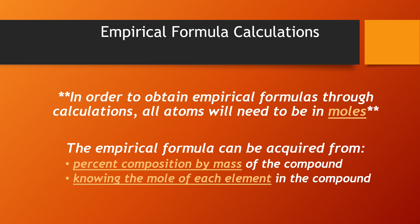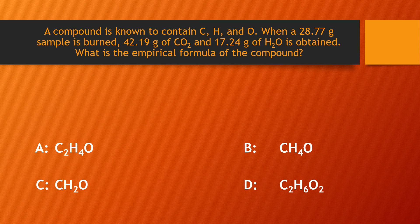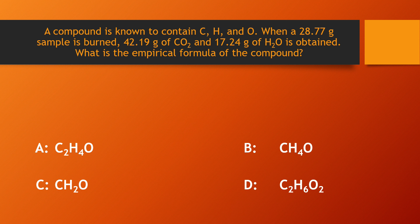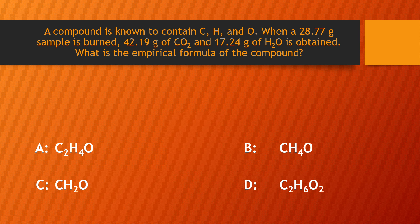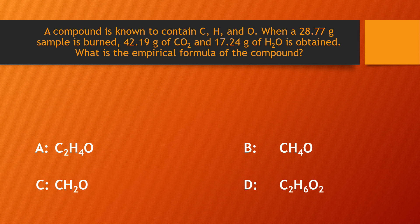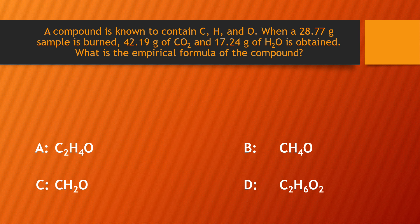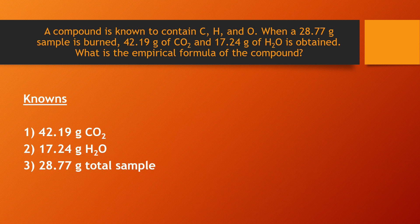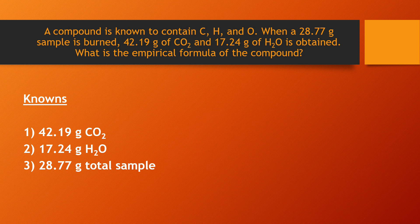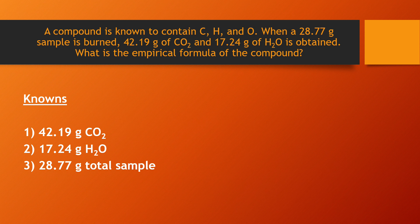Let's look at an example calculation question. A compound is known to contain carbon, hydrogen, and oxygen. When a 28.77 grams sample is burned, 42.19 grams of carbon dioxide and 17.24 grams of water is obtained. What is the empirical formula of the compound? First, we should figure out what our knowns are. We are given 42.19 grams of CO2, 17.24 grams of H2O, and a total sample weight of 28.77 grams.